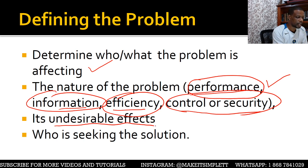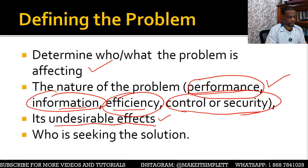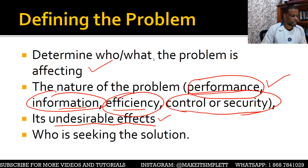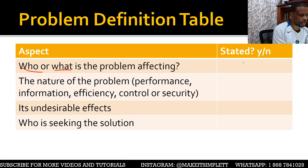If you don't have the undesirable effects, then the definition of the problem won't be working out too well. So whenever you define your problem, it must have who the problem is affecting — who or what — and you must have the nature of the problem, whether it's performance, information, efficiency, control, or security. You must have its undesirable effects, and you must have who is seeking a solution.